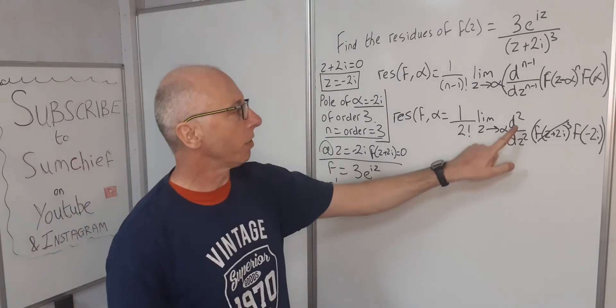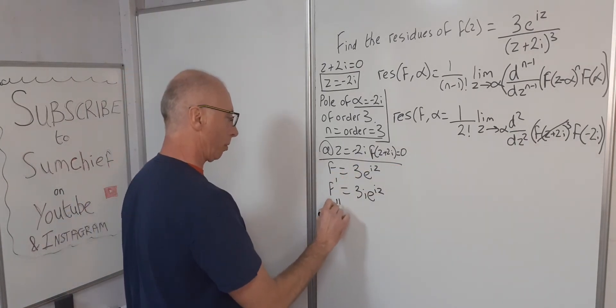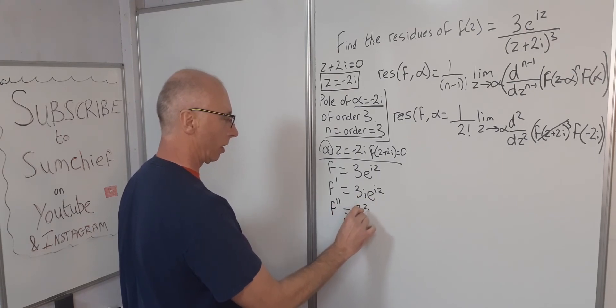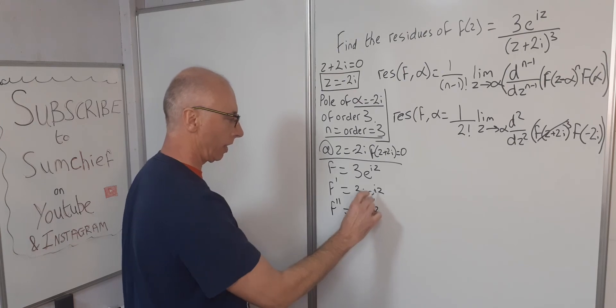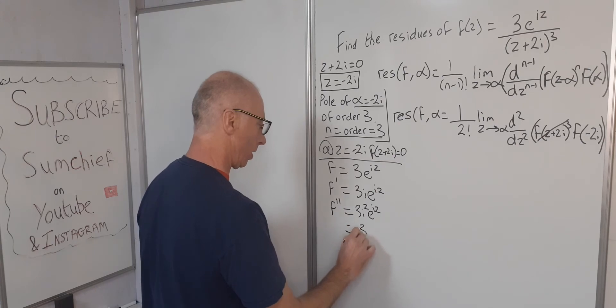And now we need to find the second derivative according to this. So f double prime. Again, bring the i to the front. 3i²·e^(iz). e^(iz) always stays. 3i² is just -3. So that's -3e^(iz).